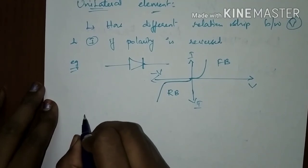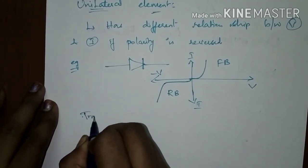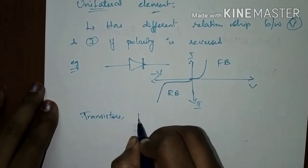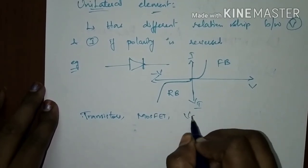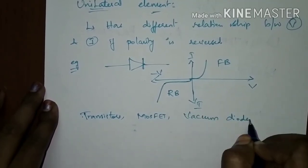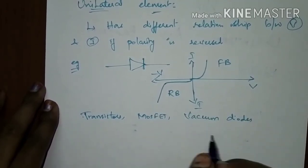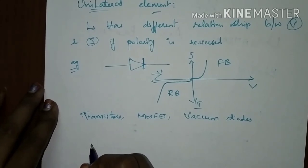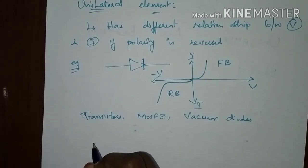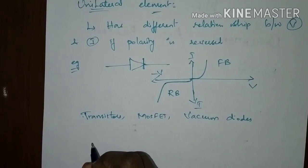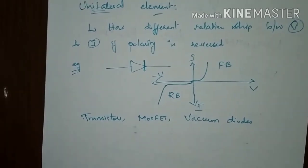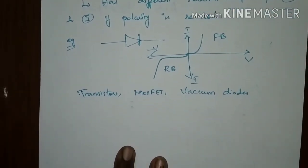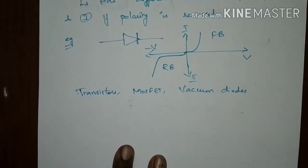There are many examples of unilateral elements. Most semiconductor devices are unilateral, for example silicon diodes, transistors, MOSFETs, and vacuum diodes. Most semiconductor devices are unilateral elements and exhibit the property that the VI relationship changes if you reverse the polarity of the voltage. These are the unilateral and bilateral elements.